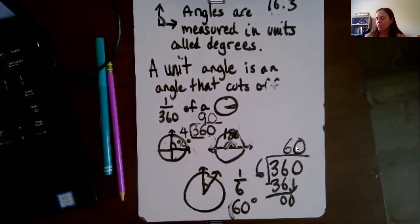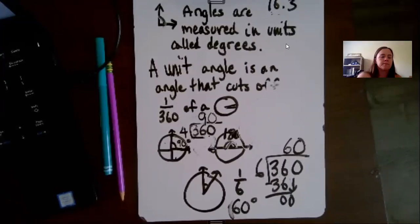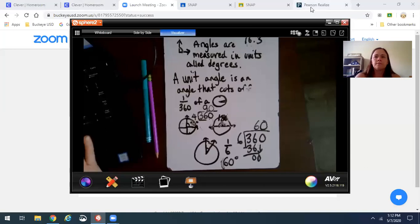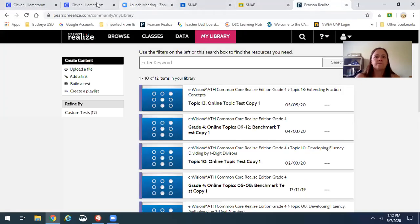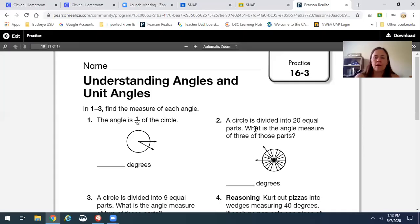Okay, so let's take a look at your actual problems in your math book that you might see. All right, so this is the practice page that you're going to do. This one, you're going to do 1/12 of the circle. So you would do 360 divided by 12.